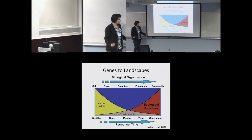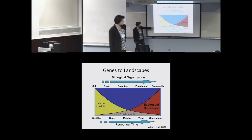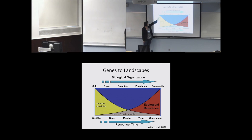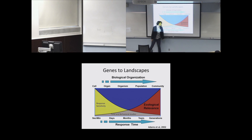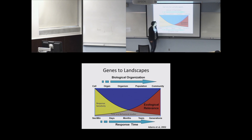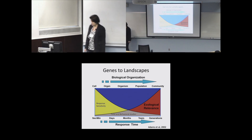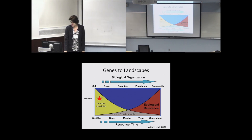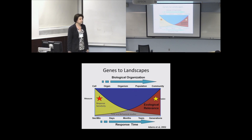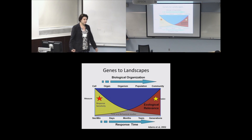We know that response sensitivity to stressors is really high at the cell level, and it really drops down as you move into years and generations — things that have high ecological relevance. Basically, we're really good at measuring things at the molecular level, but we have trouble predicting things at the population level. That's what the whole idea of the adverse outcome pathway framework is about.